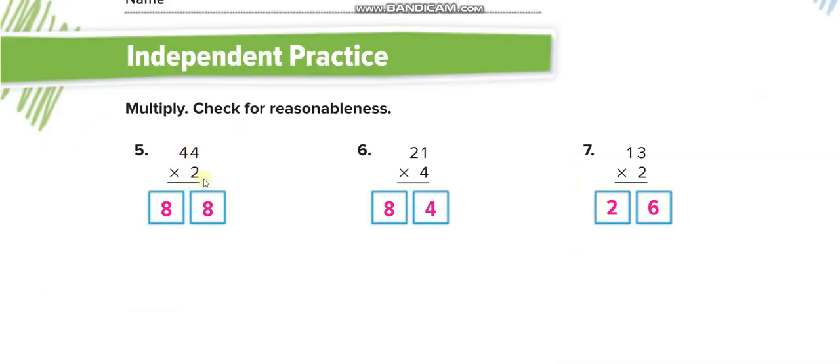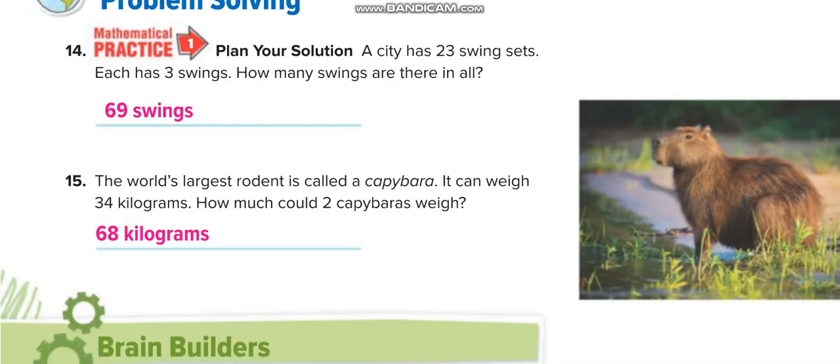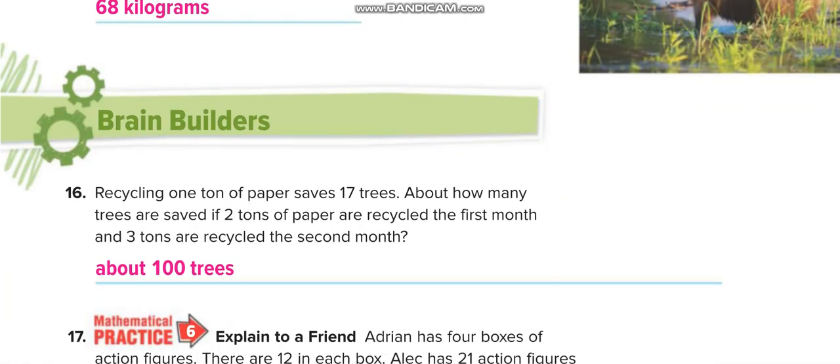23 up and 3 down, so 69. The world's largest rodent is called a capybara. It can weigh 34 kilograms. How much could 2 capybaras weigh? So 34 times 2 is 68 kilograms.